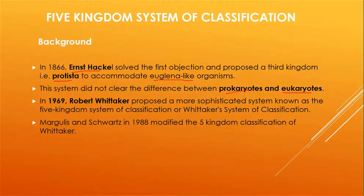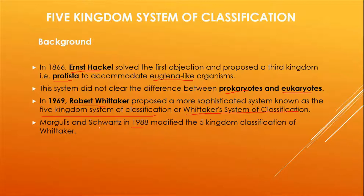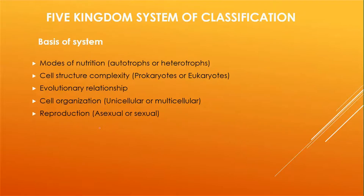In 1969, Robert Whittaker proposed a more sophisticated system known as the five kingdom system of classification, also called Whittaker's system of classification. Then in 1988, Margulis and Schwartz both modified the five kingdom system.